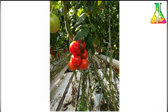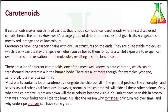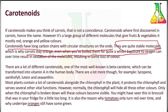Carotenoids are extracted from annatto, saffron, paprika, and tomato and used as natural food colorants. Extracts of carrot, butter fat, and palm oil contain beta-carotene, which is a precursor of vitamin A and shows vitamin A activity. Carotenoids have a long carbon chain with a circular structure on the ends, making them quite stable molecules. This is why carrots stay orange even when boiled for a long time; exposure to oxygen can over time result in oxidation, but the long carbon chains contribute to their stability.